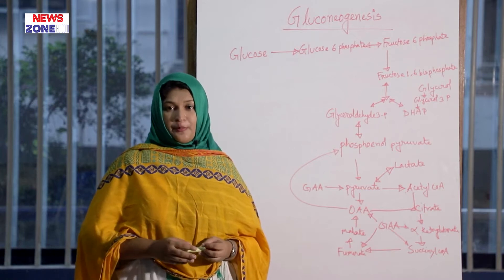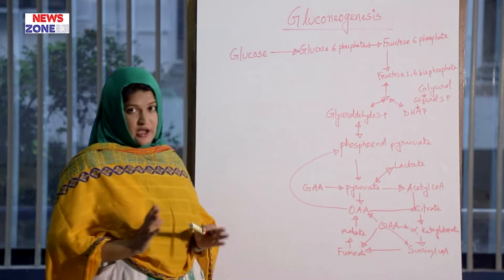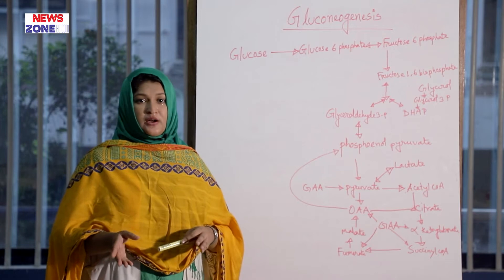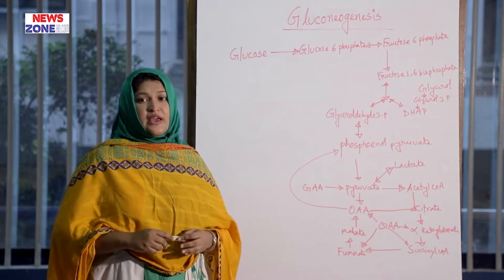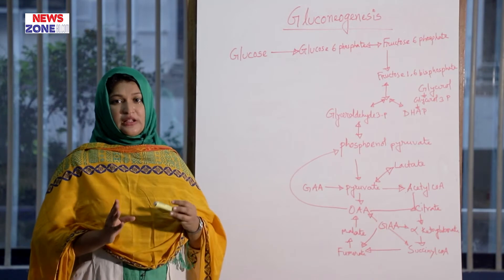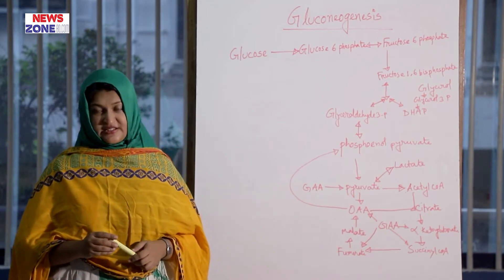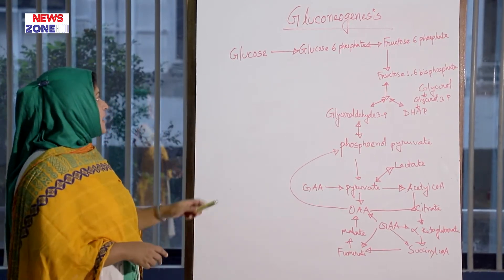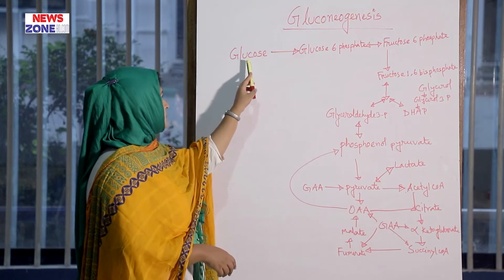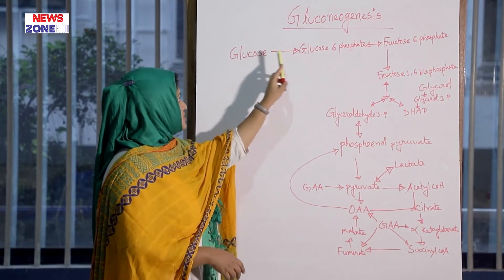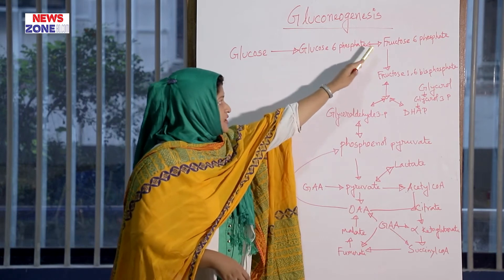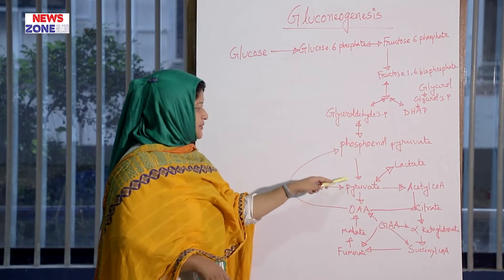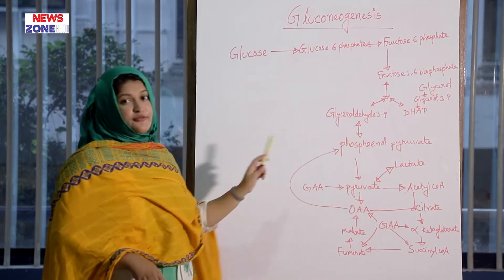In the gluconeogenesis procedure, no ATP is produced; instead, six ATP are needed, which come from the beta-oxidation of fatty acids. Looking at the pathway: from glucose there is glucose-6-phosphate, fructose-6-phosphate, fructose-1,6-bisphosphate, glycerol-3-phosphate, dihydroxyacetone phosphate, phosphoenolpyruvate, and pyruvate/lactate. These are the steps of glycolysis.